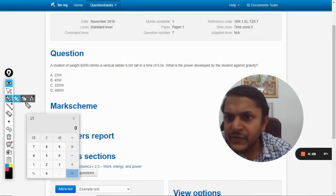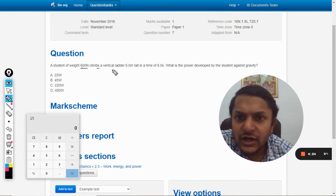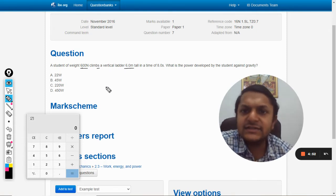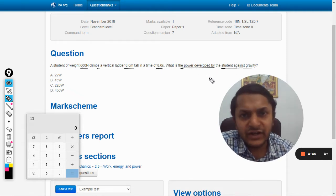Okay, so in this question, a student of weight 600 Newton climbs a vertical ladder that is 6 meter tall in time 8 second. What is the power developed by the student against gravity?